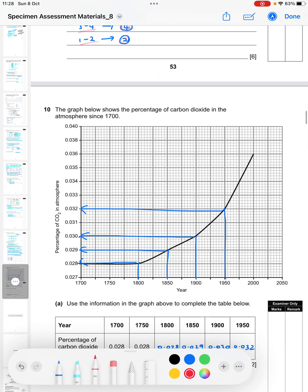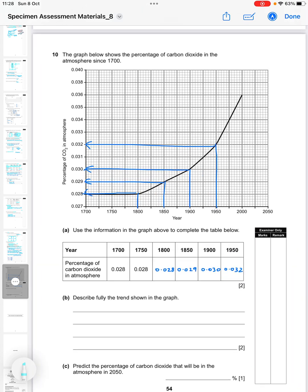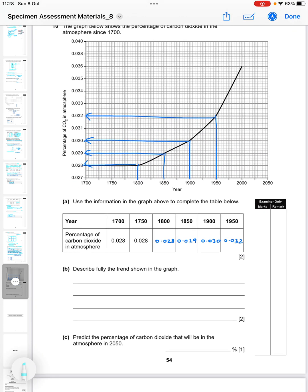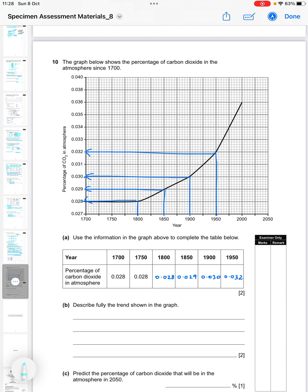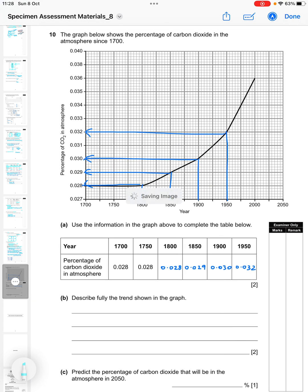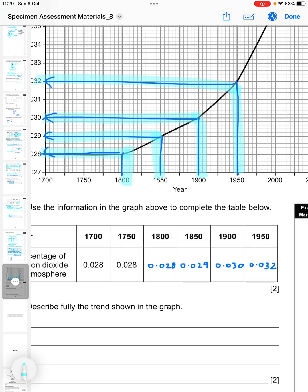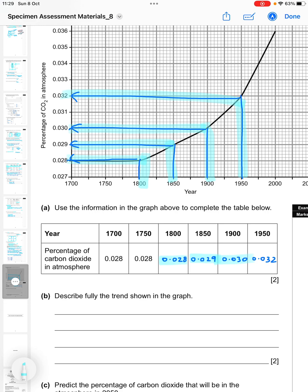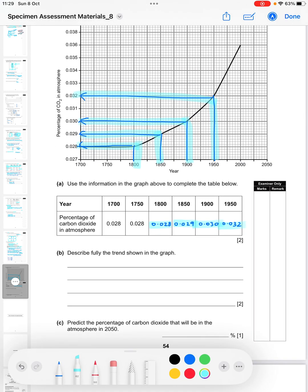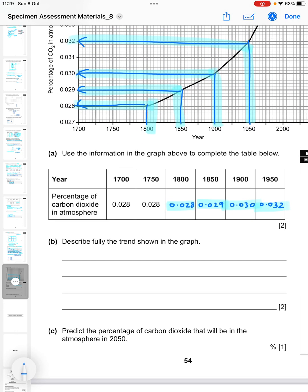Finally, here we are on to the last question which is about rate. The graph below shows the percentage of carbon dioxide in the atmosphere since 1700. Use the information in the graph above to complete the table. You can see I've just drawn lines at each one to figure out which it is. So at 1800: 0.028, 1850: 0.029, 1900: 0.030, and at 1950: 0.032.